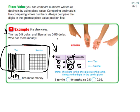The digits in the ones place are the same. This is what it says in the think. The digits in the one place is the same, so you would move over to the tenths place. Five tenths is greater than zero tenths. So Tim's amount, five tenths, is greater than Sienna's amount of five hundredths.